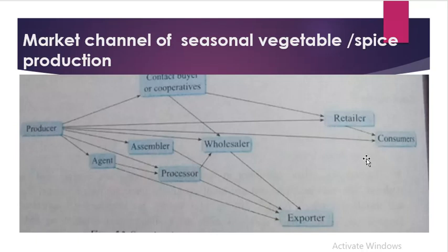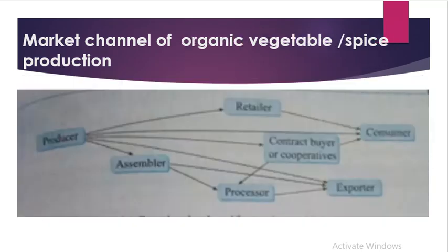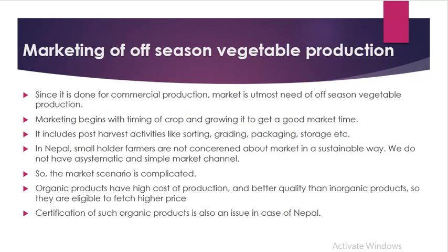The producer can sell directly to the consumer, or the producer can sell to the retailer, or go through other channels — just go with the flow on the arrow. For organic vegetables, the situation is similar, but in our case there are fewer actors involved, so the flow chart is simpler.